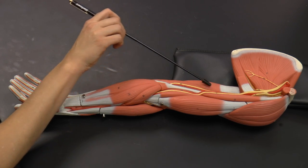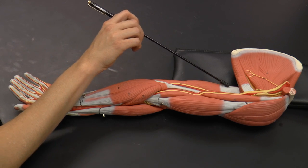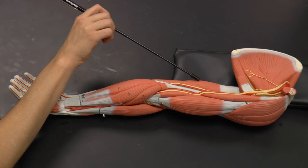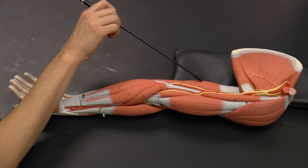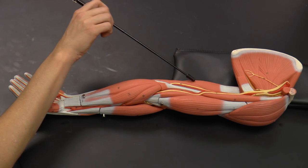You can also see, even though we're on the anterior view, because of the orientation you can actually see part of the triceps brachii, which we'll look at in more detail when we look at the posterior view.